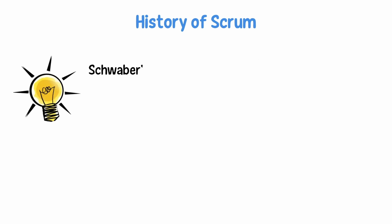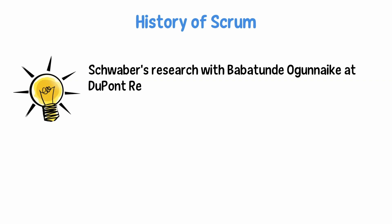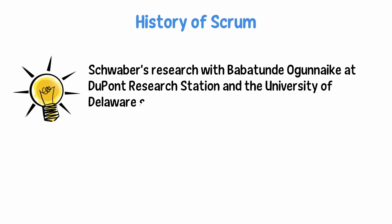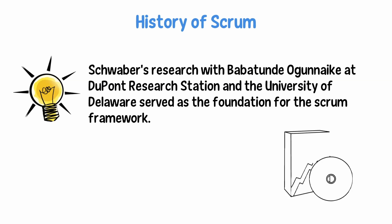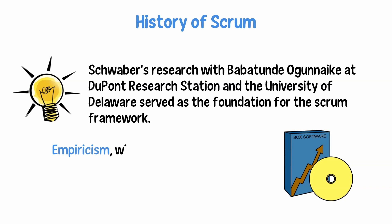Schweber's research with Babatundi Ogunayaka at DuPont Research Station and the University of Delaware served as the foundation for the Scrum framework. Ogunayaka advised that attempts to develop complex products, such as software, without empiricism were doomed to higher risks and failure rates as the initial conditions and assumptions changed.